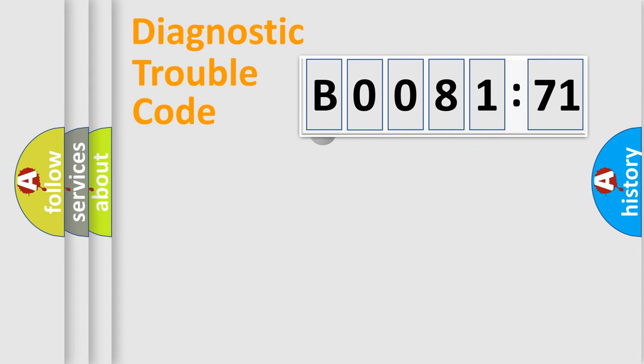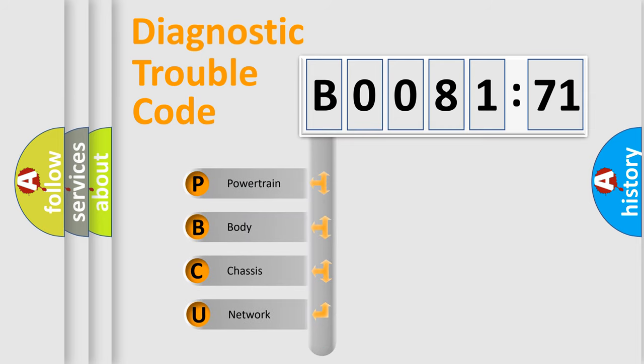First, let's look at the history of diagnostic fault code composition according to the OBD2 protocol, which is unified for all automakers since 2000. We divide the electric system of automobile into four basic units.